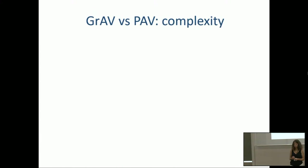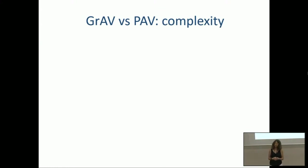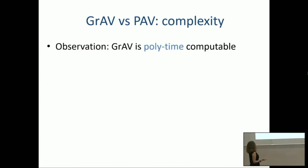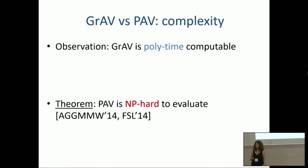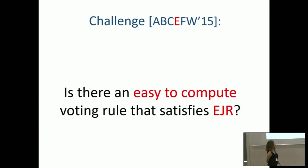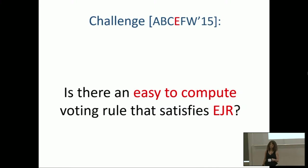Axiomatically, we've narrowed from two voting rules to one — we discarded greedy approval voting and are left with PAV. Now let's look computationally. When I described PAV, I told you how to evaluate a committee but not how to find one. You can go through all possible committees and select the best, but that's expensive. In fact, it was shown around the same time that computing the PAV winner is NP-hard. So if you want efficient computability, PAV is perhaps not a great voting rule. The challenge — how we ended the AAAI 2015 paper — is: is there an easy-to-compute voting rule that satisfies EJR?